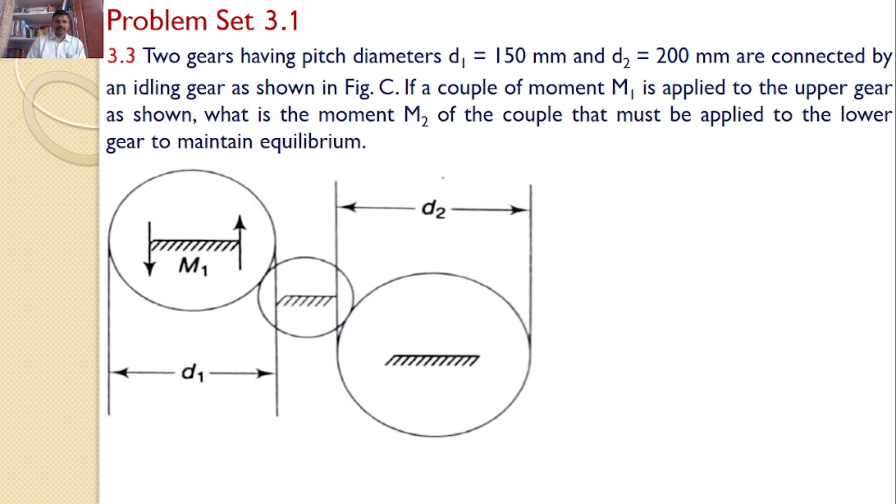A moment M₁ is applied to gear 1, causing it to rotate. This rotation is transmitted to the idler, and because of the idler rotation, it is transmitted to gear 2.